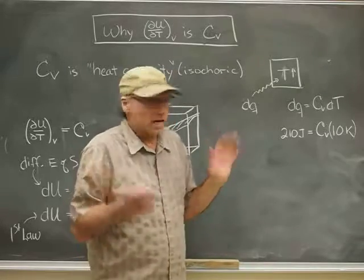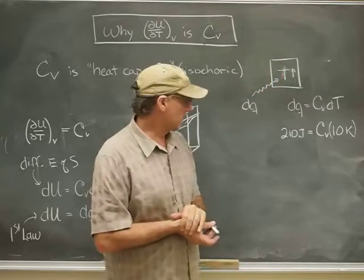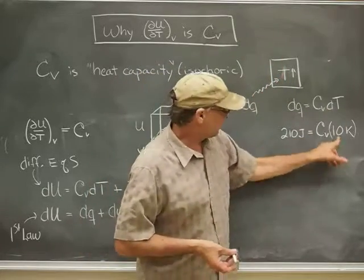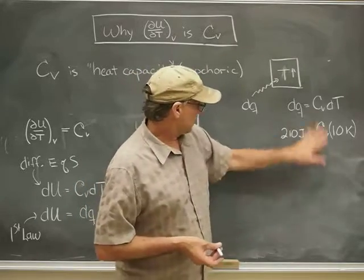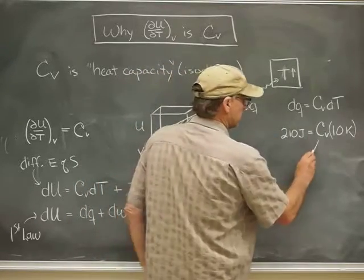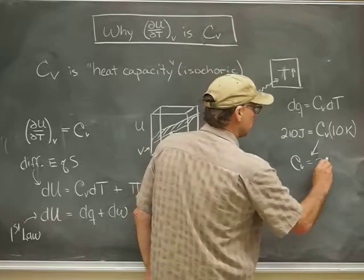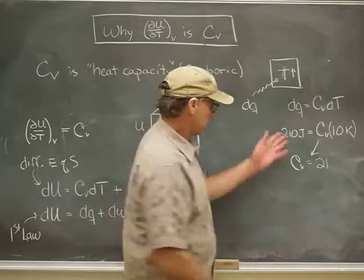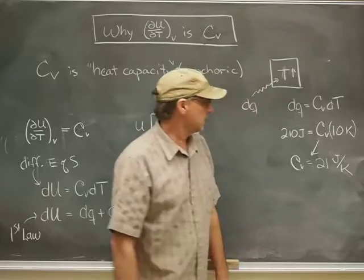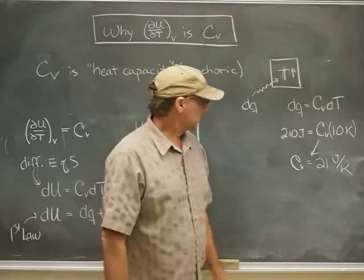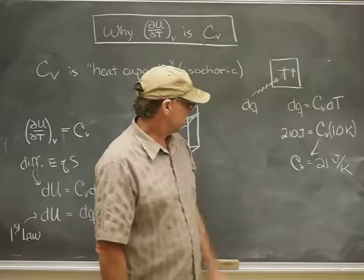For example, if I put 210 joules into my system and saw that the temperature went up - the change in temperature was 10 Kelvin - then I would use that equation and solve it. That means CV must equal 21, and the units are joules per Kelvin. That would be the heat capacity of that system that we determined from that experiment at some particular temperature.